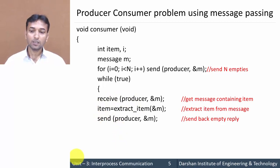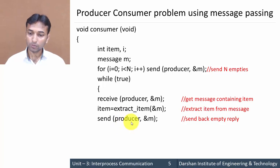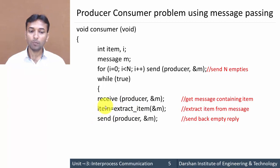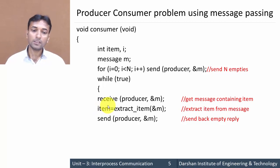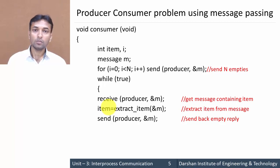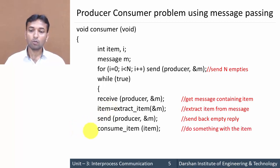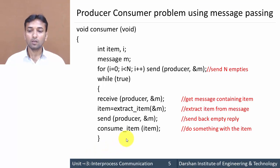Once all the data is extracted from the message, the consumer sends an empty slot back to the producer — 'send(producer, &m)' — to inform the producer that it has received the data. Whatever item was extracted into the item variable is now consumed by the consumer. This completes the while loop and the void consumer function. This is how the producer-consumer problem works using message passing.